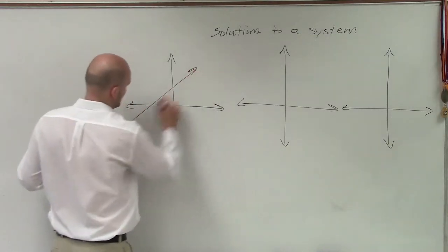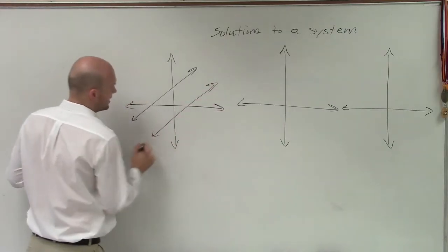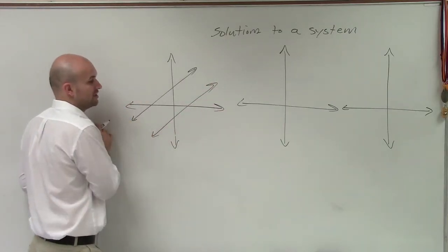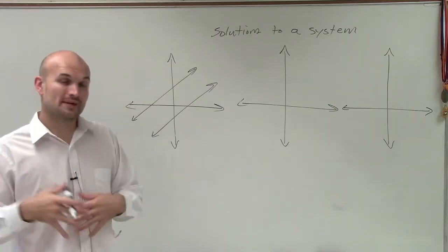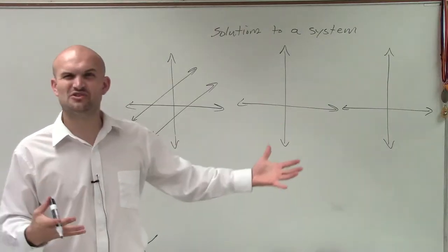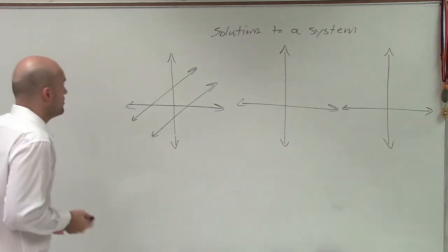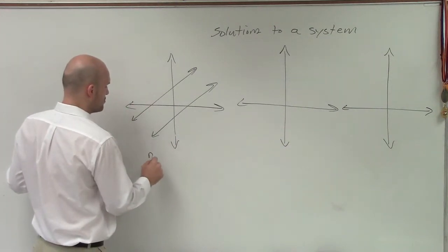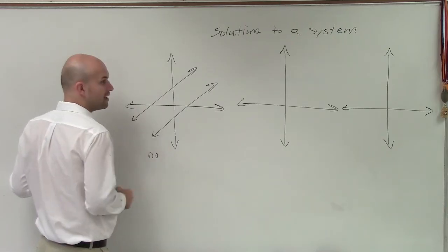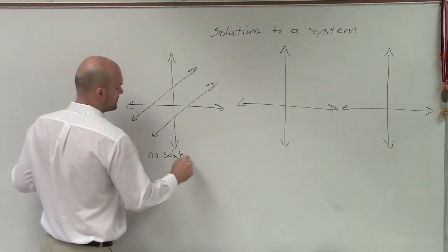We can have both equations parallel to each other, meaning they do not intersect. Therefore, if we're asking what is the solution — what value makes both of them true — we would understand that does not exist. So this is what we call no solution.